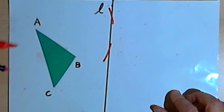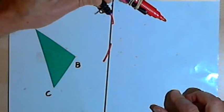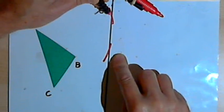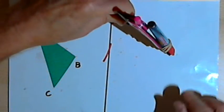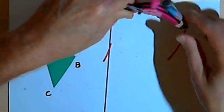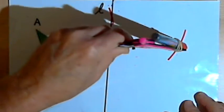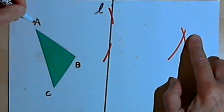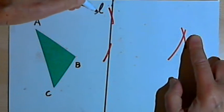Without changing the setting on the compass I'm going to move it to where each of those arcs intersected line L, and draw two more arcs that will intersect each other. At the place where those two arcs intersect I've got the reflection of point A in line L.